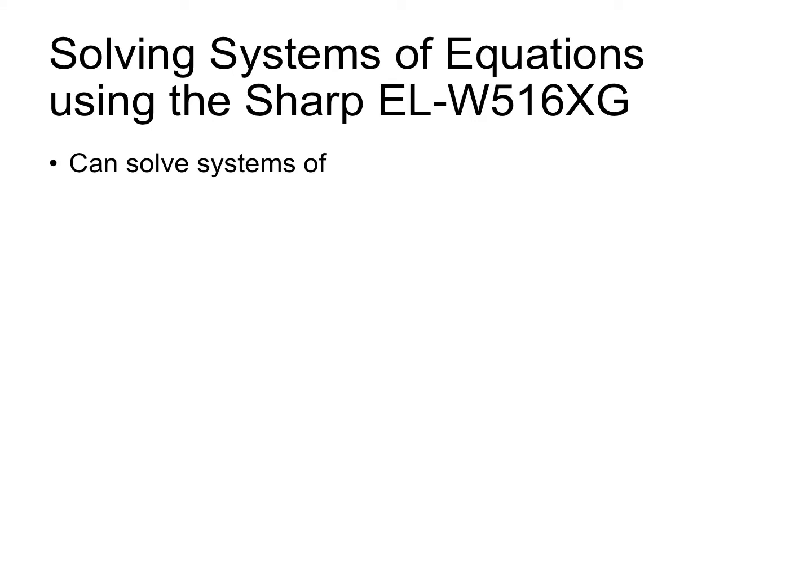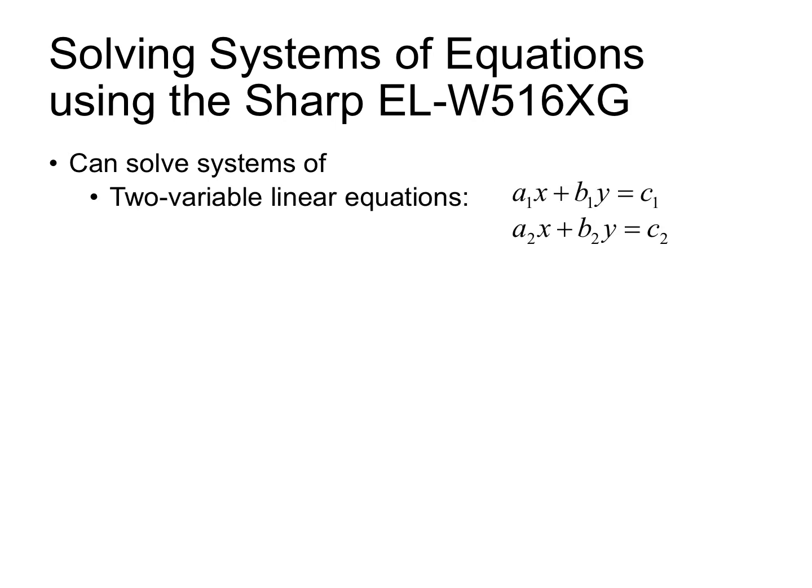The SHARP ELW516XG calculator can be used to solve systems of equations. It can solve two-variable linear equations of the form AX plus BY equals C, where the coefficients for each of the equations are given by the A and the B value, and the constants that the equations are equal to are given by the C value.